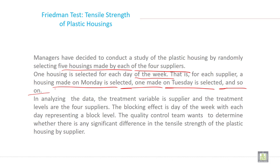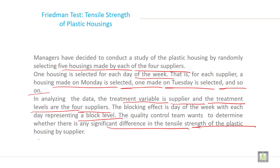In analyzing the data, the treatment variable is supplier and the treatment levels are the four suppliers. The blocking effect is day of the week, with each day representing a block level. The quality control team wants to determine whether there is any significant difference in the tensile strength of the plastic housing by supplier.